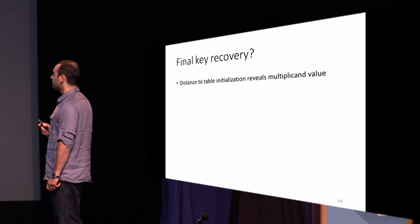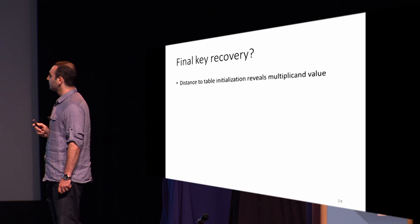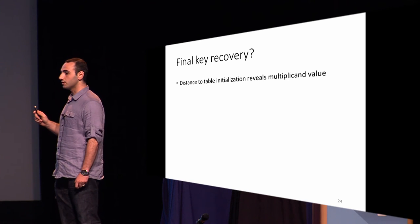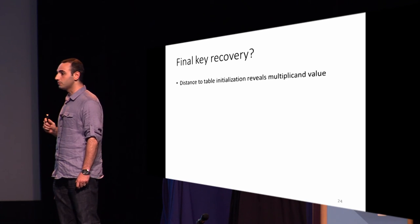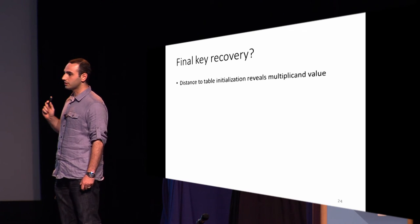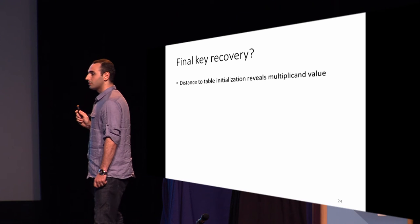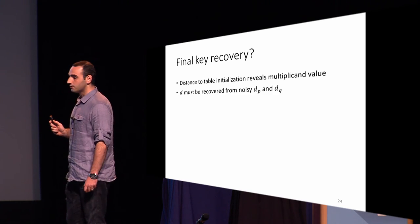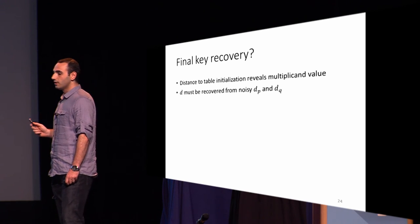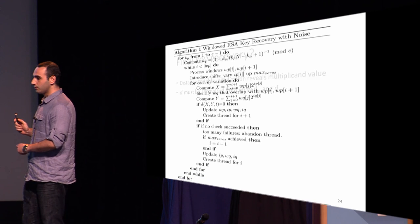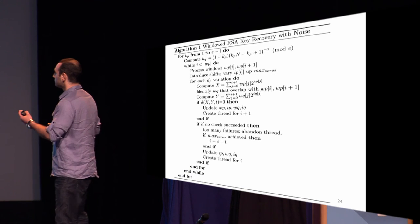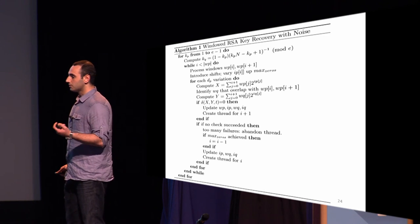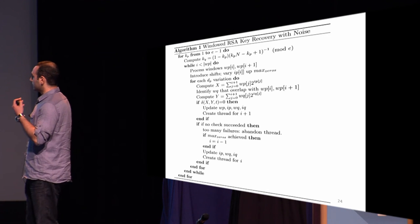For the final key recovery, we combine traces. We know which cache set holds which table value by measuring the distance from the table initialization, so we identify which sets hold x^5, x^7, x^9, and so on. We then recover d from noisy dp and dq using an algorithm that takes the public key of the target along with knowledge of the noisy dp and dq to recover d efficiently.